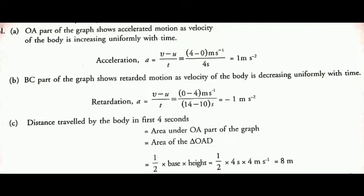For the third subtopic, distance travelled by the body in the first 4 seconds: we find the area under the OA part of the graph, which is the area of triangle OAD. Area of triangle equals half times base times height, so we have half times 4 seconds times 4 m/s, which gives us 8 meters. So the distance travelled by the body in the first 4 seconds is 8 meters.